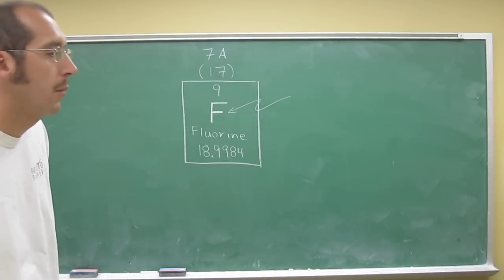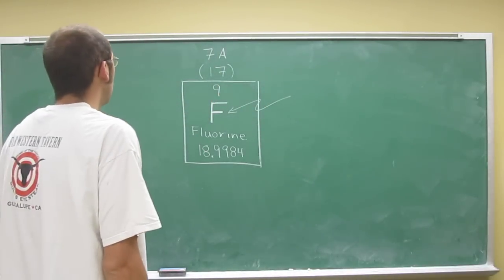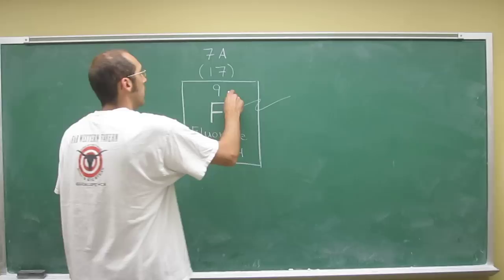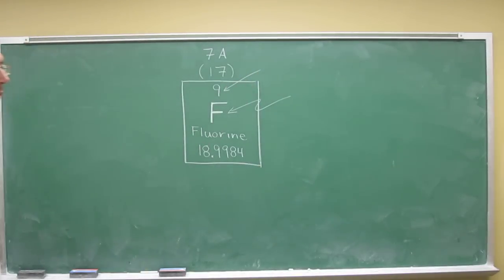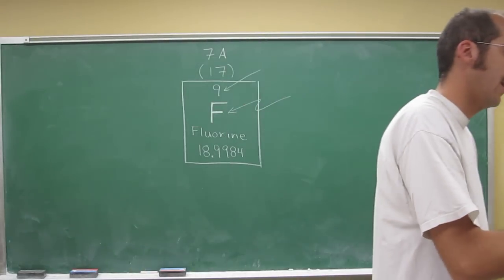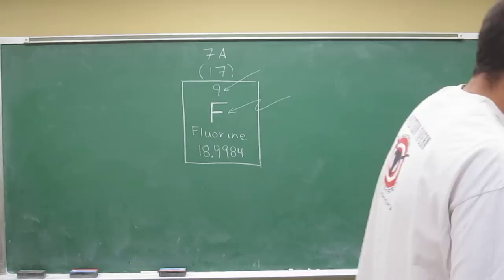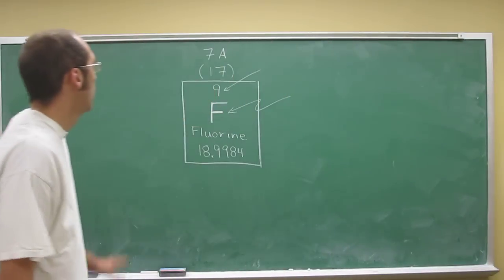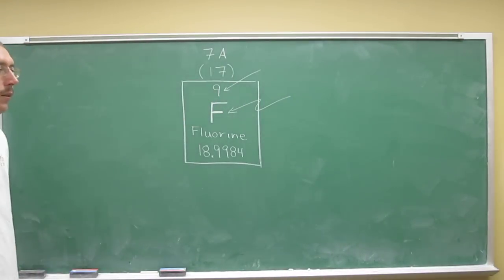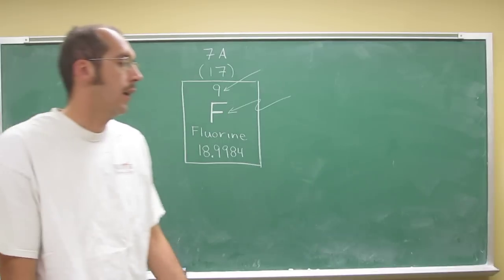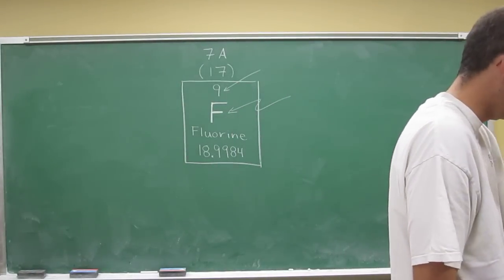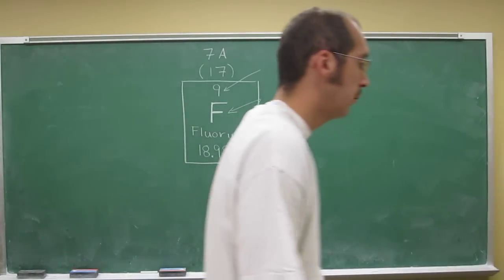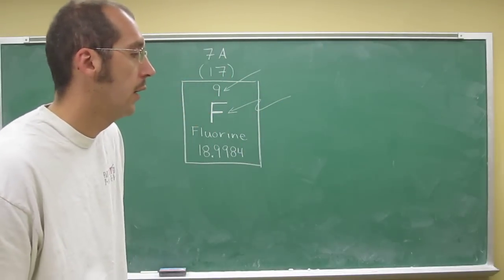The atomic number of fluorine is this number here—it's nine. If you look at the periodic table, fluorine is the ninth element, and it's got nine protons, which we'll talk about in a second. But since it's the ninth one on the periodic table, that's its atomic number.